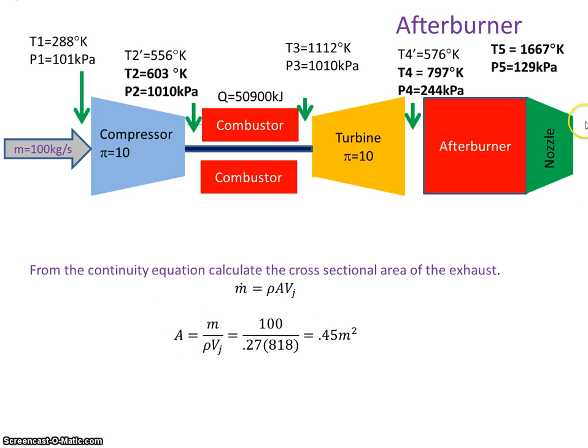I can work out what the cross-sectional area of the nozzle is from the continuity equation. The mass flow is rho A V. So rearranging that, I'm plugging in 100 kilograms for the mass, the density of 0.27, and my velocity of 818, which I just calculated. I get the area of the nozzle to be 0.45 meters squared.